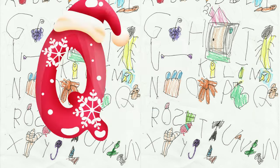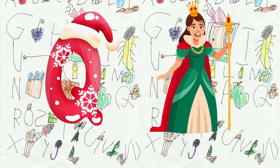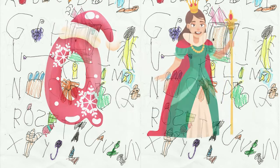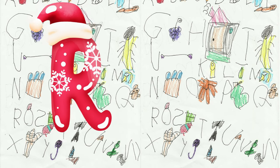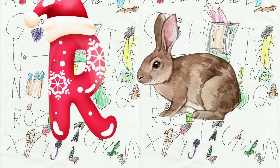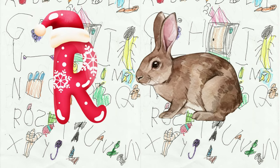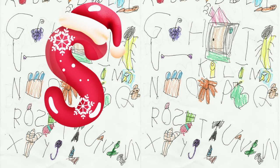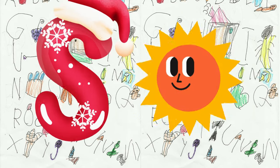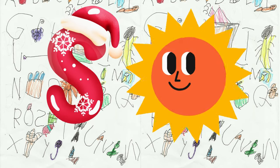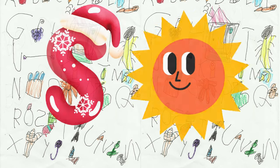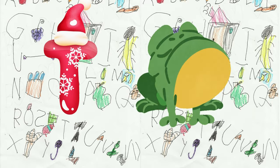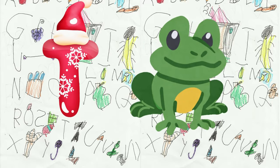Q is for queen, k-k-queen. R is for rabbit, r-r-rabbit. S is for sun, s-s-sun. T is for toad, t-t-toad.